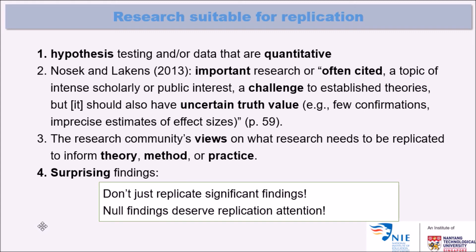Another criterion is that the research community's view on what needs to be replicated is important, as it informs what kind of research contributes to theory building, makes available methods more precise, or creates better practices in the field. Finally, it's not advisable to only replicate significant findings — you can also aim to replicate null findings, which show no connection between variables. If you can replicate a null finding in a different context, you have shown that it holds in that context as well.